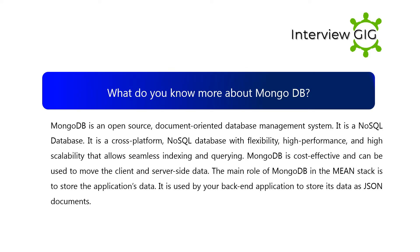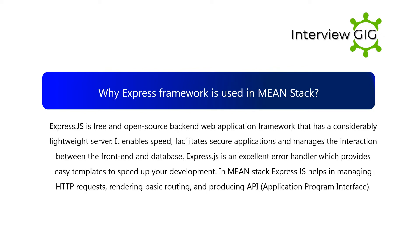What do you know more about MongoDB? MongoDB is an open source document-oriented database management system. It is a NoSQL, cross-platform database with flexibility, high performance, and high scalability that allows seamless indexing and querying. MongoDB is cost-effective and can be used to move client and server-side data. The main role of MongoDB in the MEAN stack is to store the application's data as JSON documents.